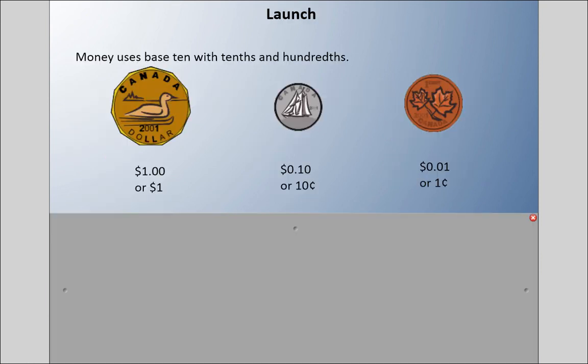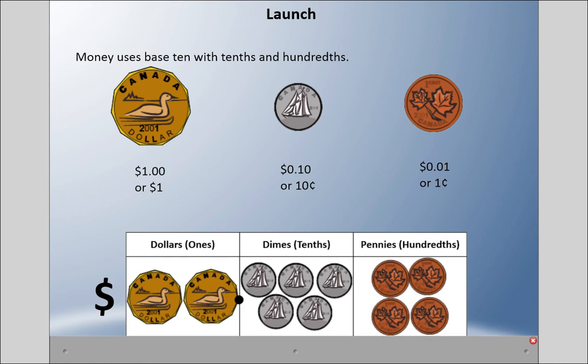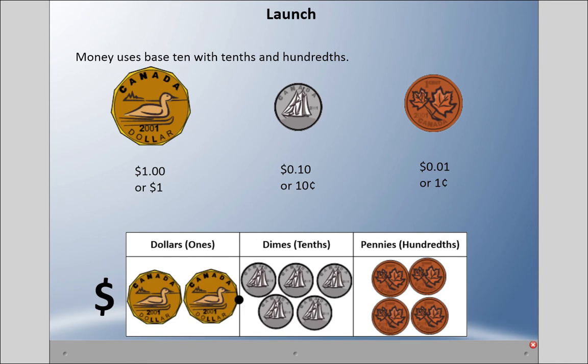Let's talk about hundredths now. We're going to look at money as a way of exploring hundredths. Money uses base 10 with tenths and hundredths. In Canada, we have loonies—that's a dollar, and it's one whole. The decimal places are zeros. A dime is 10 cents, so those are in tenths. A penny, which is discontinued in Canada but you can still find them occasionally, is one cent or one hundredth of a dollar. Here I have a place value chart that I put together.